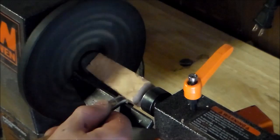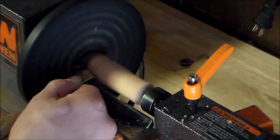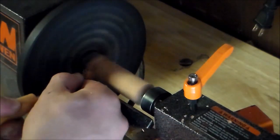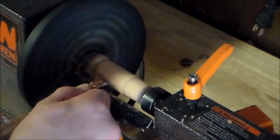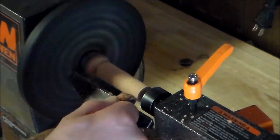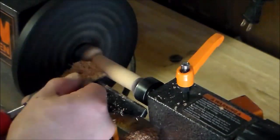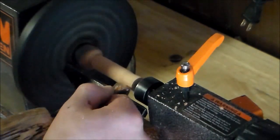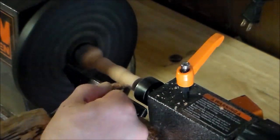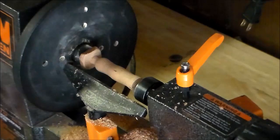For the handle, I'm using this small cutoff of cherry. And first, I'm just rounding it up and truing it up with the lathe. And then I'll grind it down to about a quarter inch in diameter. And once it's that size, I'm going to put some curves in there to make it look nice and fit well in my hand.